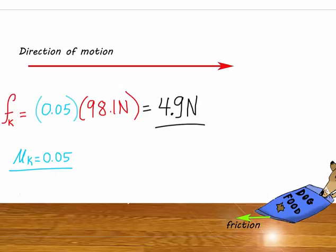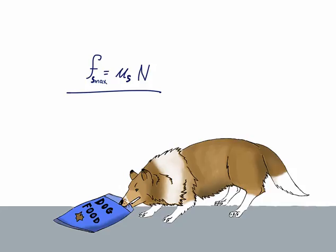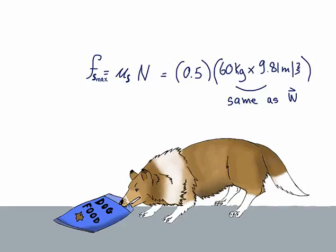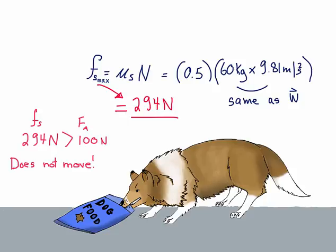Now let's see if you can apply what we learned. So to find out if the bag moves or not, we start out with the equation for static friction. Now we can plug in the numbers. We get the static friction force at 294 N. So we said that the dog applies a force of 100 N. So this isn't enough to get the bag to move.